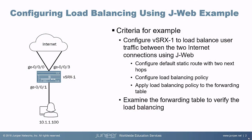Let's jump right to the example. We have a user that connects into vSRX1, and vSRX1 has two separate connections to the internet — that's ge-0/0/0 and ge-0/0/3. Keep those in mind because we'll see those in the output when we check things out. What we want to do is configure load balancing on vSRX1 between those two internet connections using J-Web.